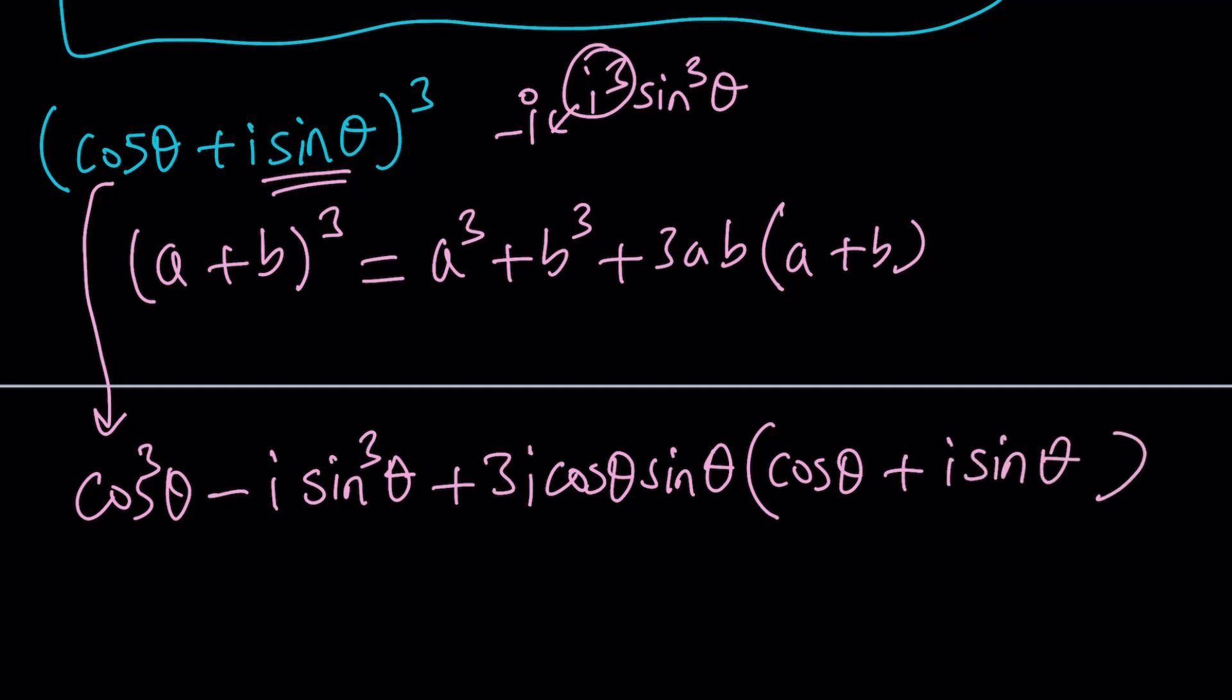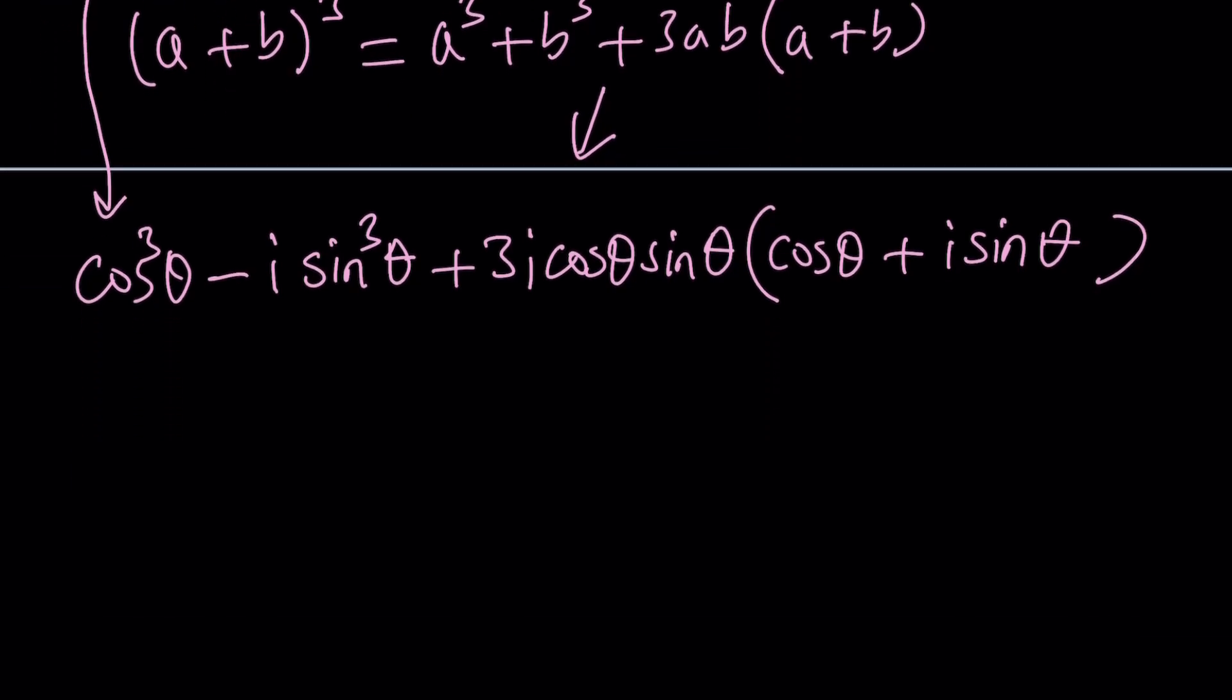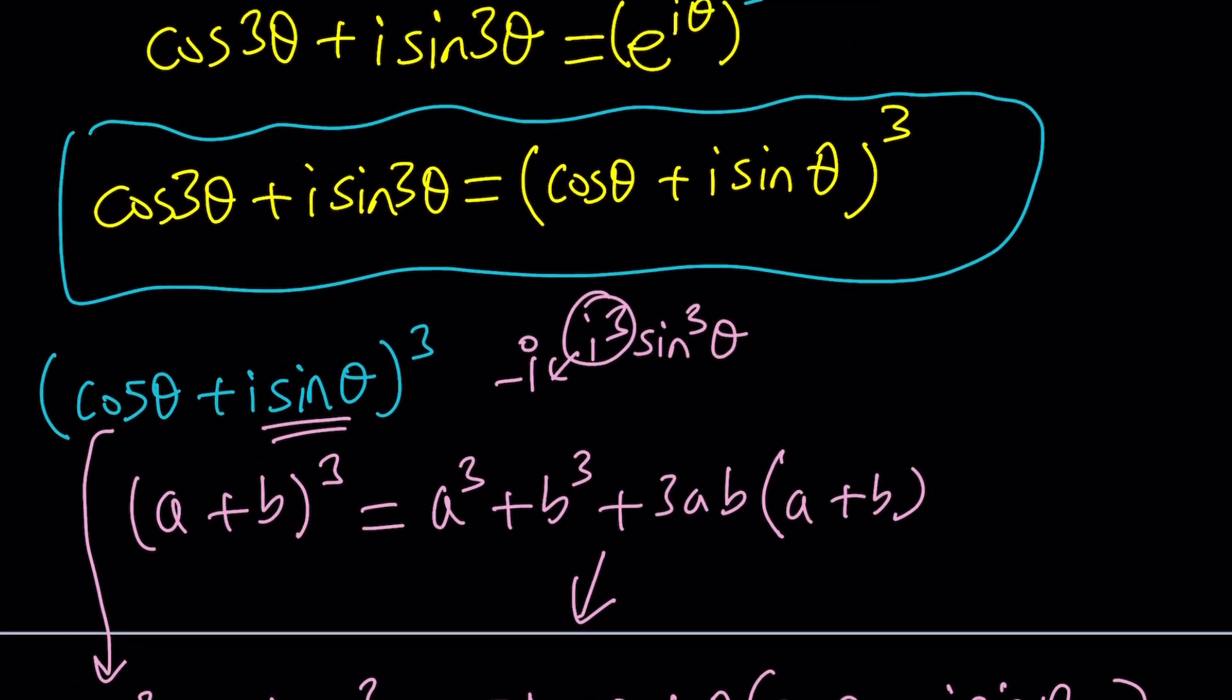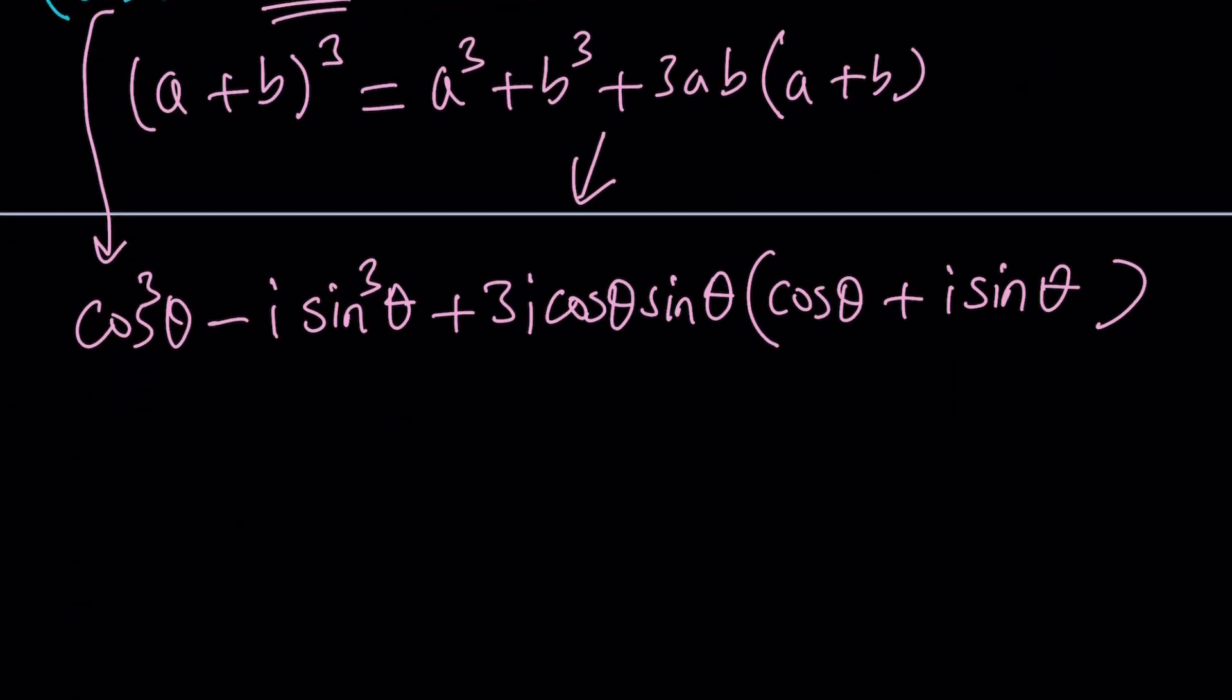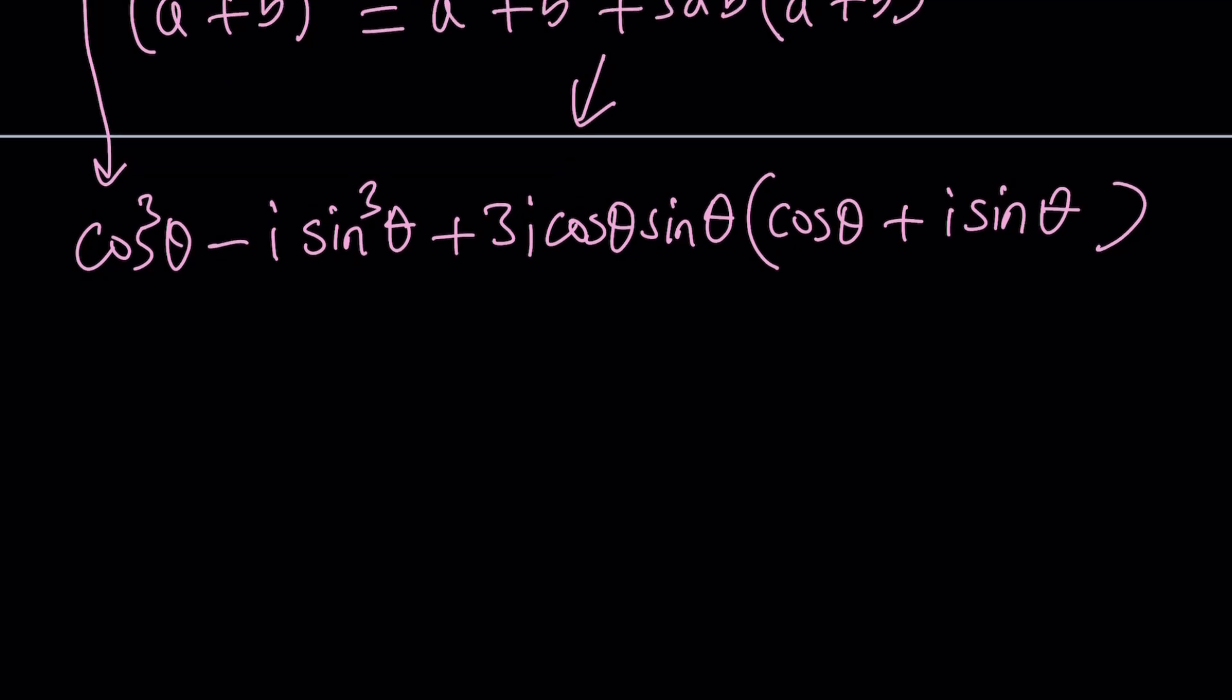So I used my identity to cube cosine theta plus I sine theta which can be written as e to the I theta using Euler's formula. And now we're going to go ahead and simplify it. After we simplify this expression we're going to set it equal to this. And then from there we're going to find something. Actually two things. Let's go ahead and proceed.